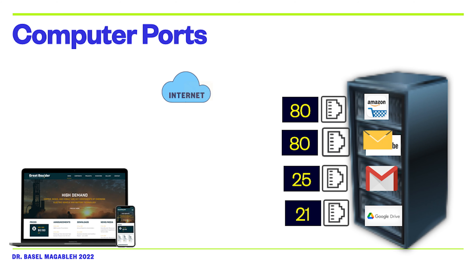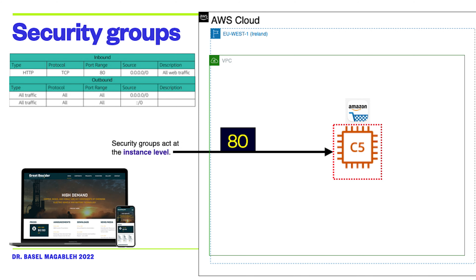So in the client-server model, each service has its own port number, and these port numbers are standard and do not change. If we build those services inside our VPC in AWS, we have to follow the same standard and use those reserved port numbers. In AWS VPC, it is very simple — we create a security group and in that security group, we open the port we need to accept traffic.